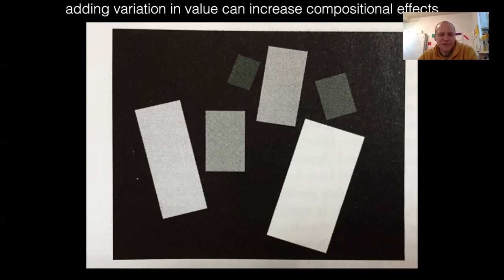Variation of value gives increased compositional effects. If all of these rectangles were white, they'd all feel like they were up at the same level close to our eyes. But if they're different values, they appear to be in different places back and forth in space.